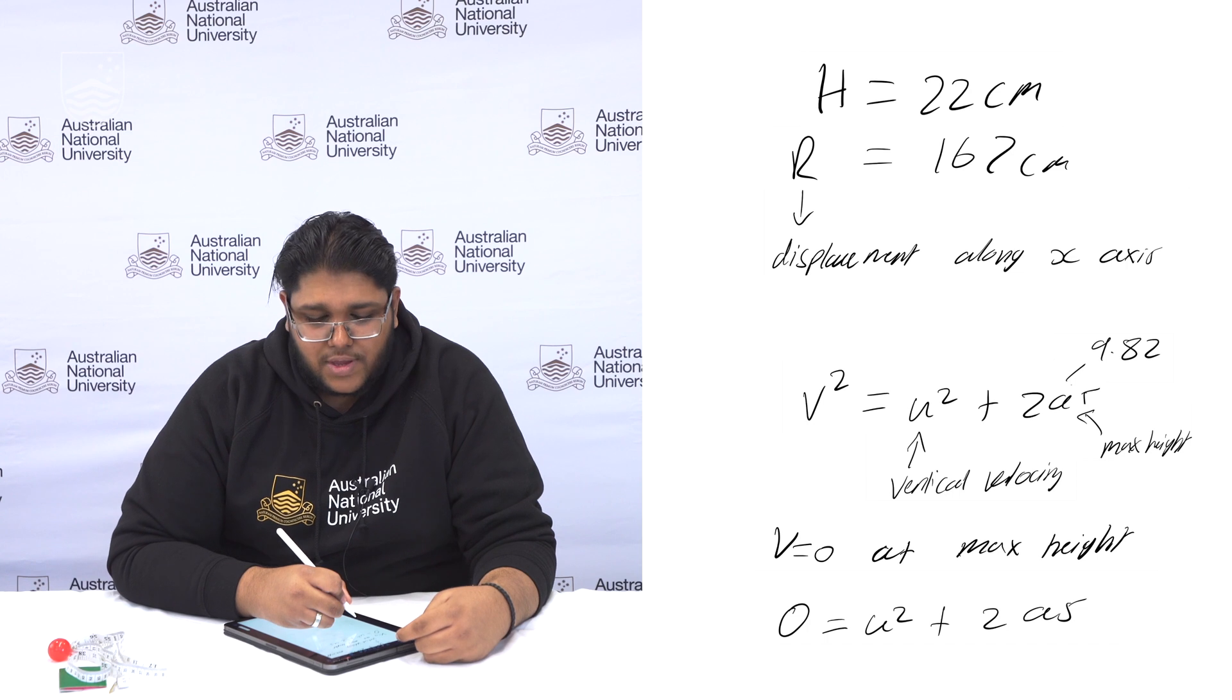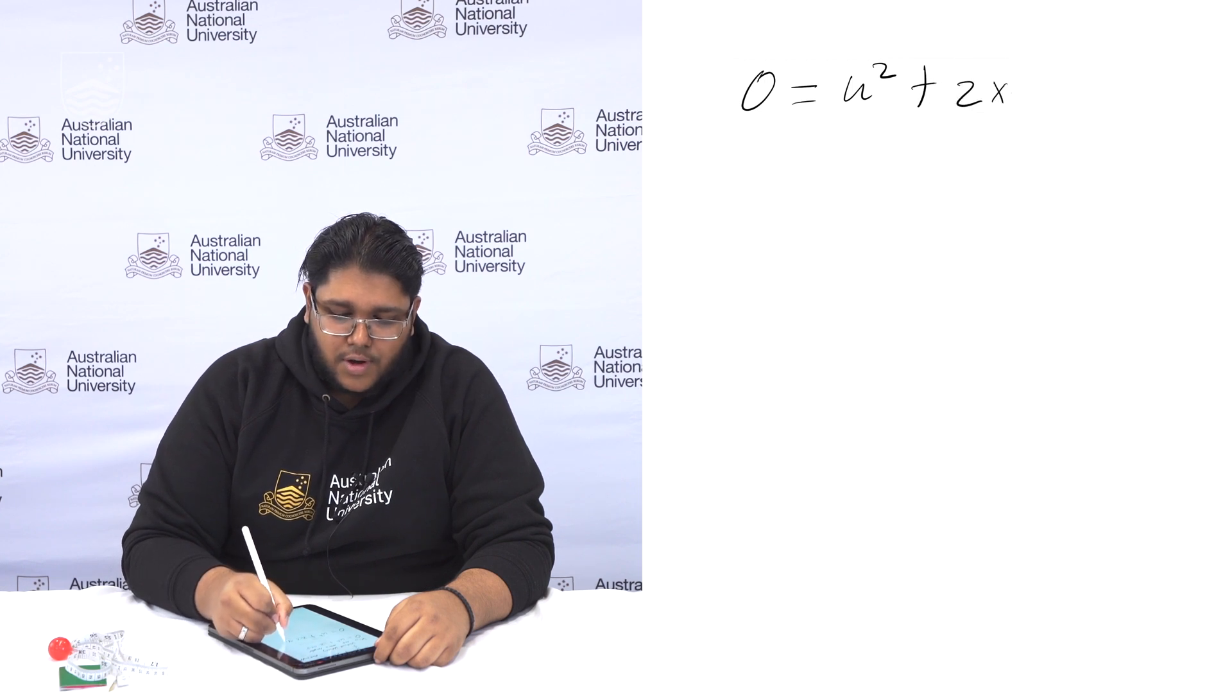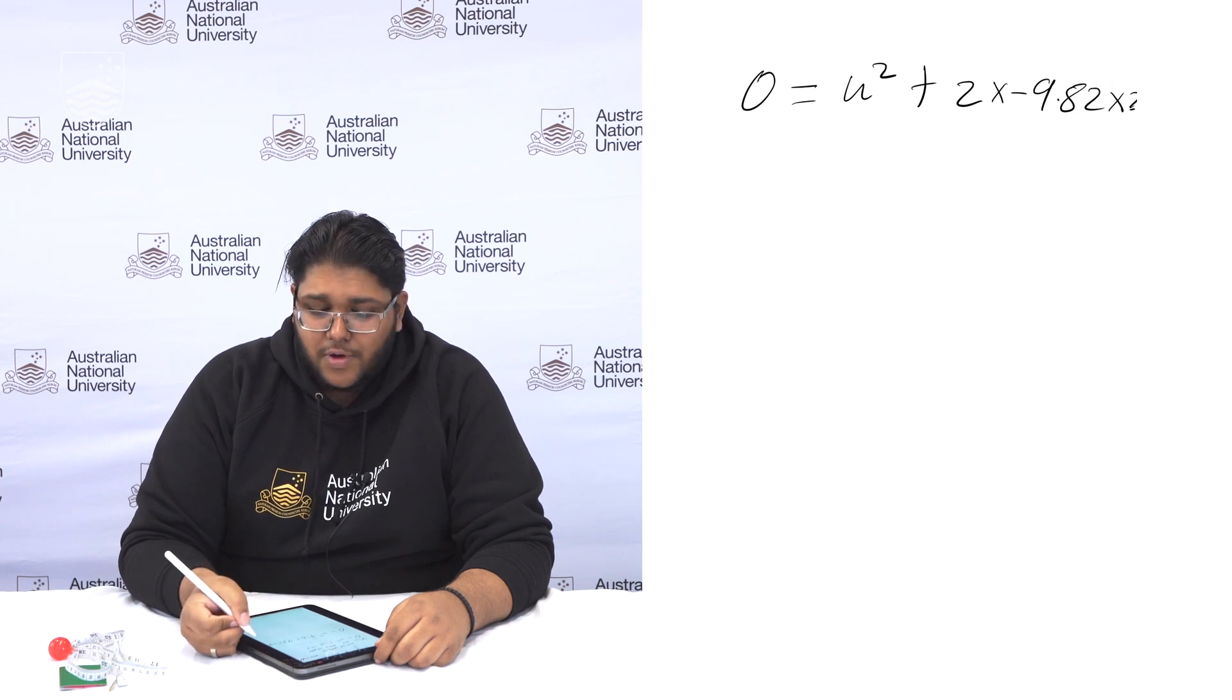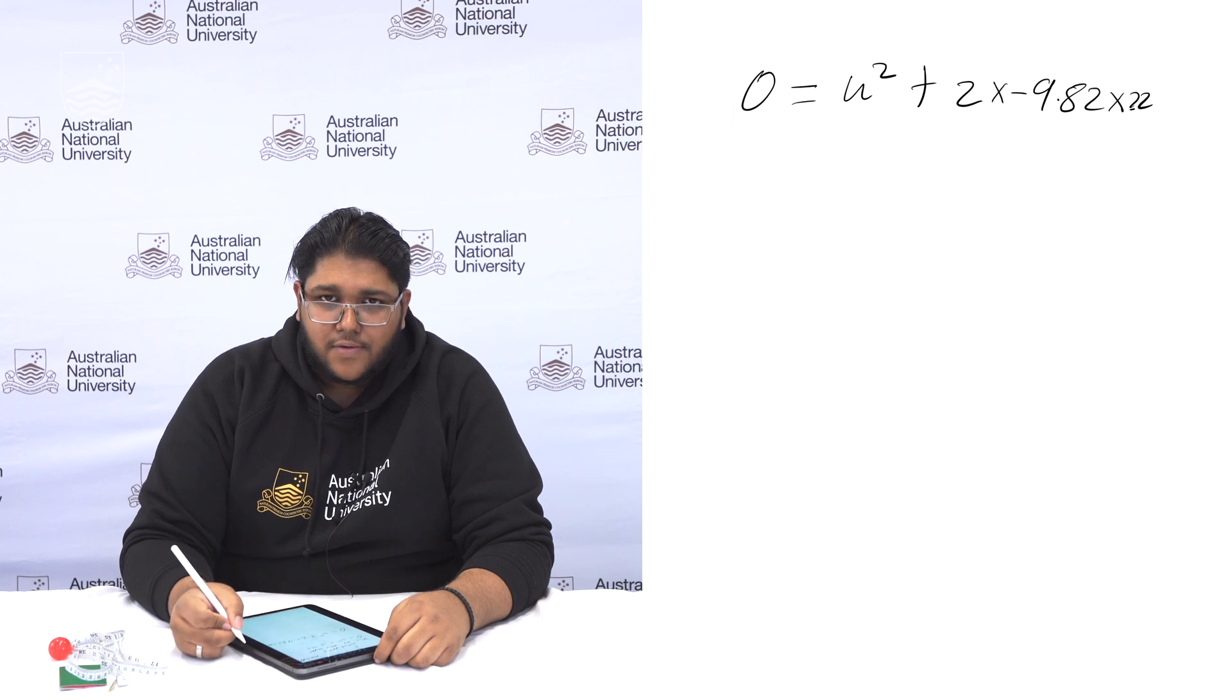Then we can substitute what we know. When we substitute the values into this we get 0 equals u squared plus 2 times 9.82 times 22. But because this is a constant deceleration this becomes negative. So it's negative 9.82.